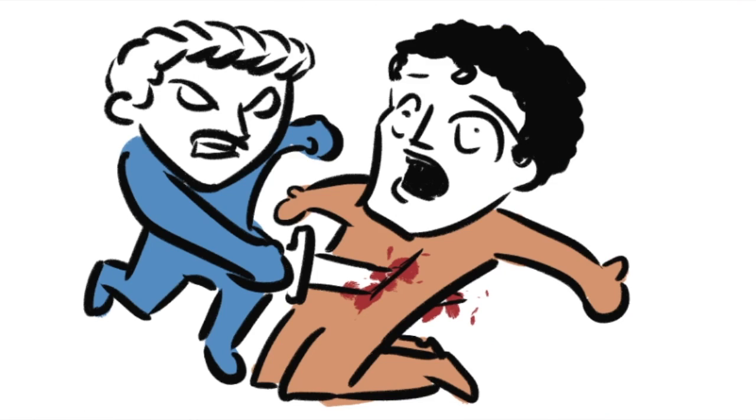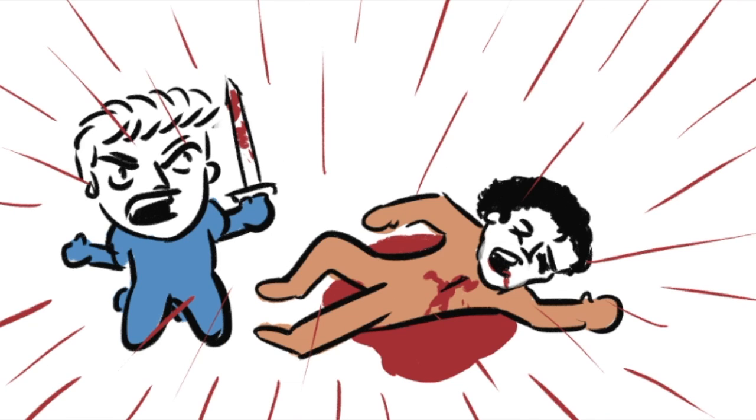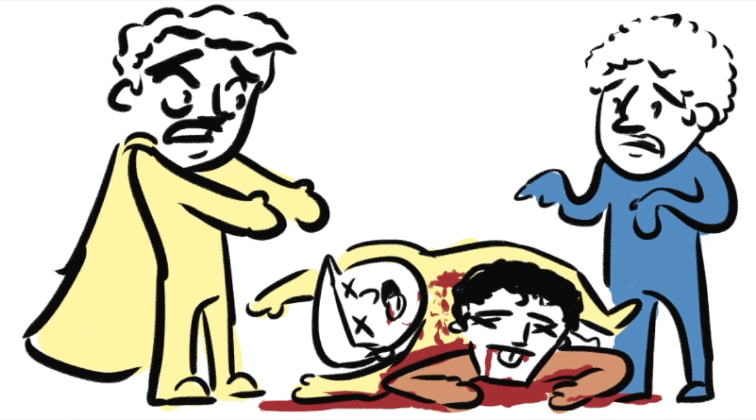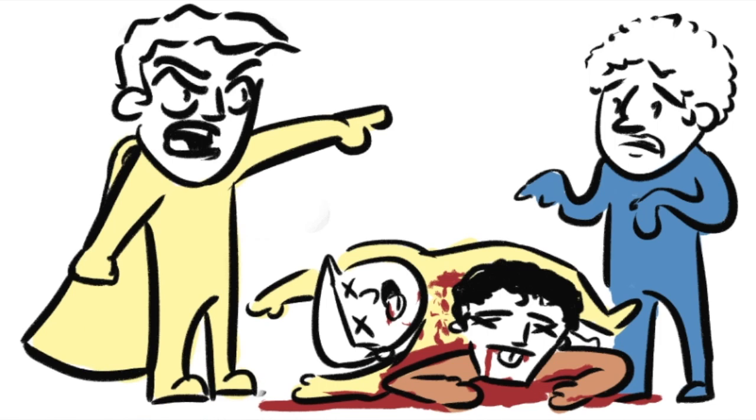In rage, Romeo kills Tybalt to avenge the death of his best friend and instantly becomes a fugitive of the law and runs away. The prince shows up at the scene and is not happy because Mercutio was one of his relatives that is now dead. Thanks to Romeo, who is now banished from Verona.